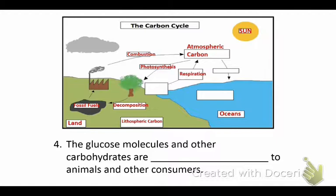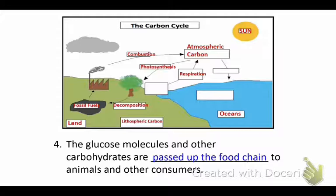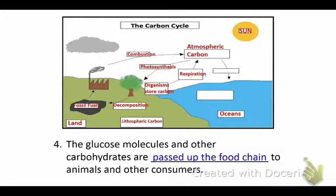Step four: the glucose molecules and other carbohydrates are passed up the food chain — from the grass to the goat, which ends up in goat curry — passed up to animals and other consumers. Organisms store carbon; we are made up of carbon, so currently there's a reservoir of carbon in each of us.